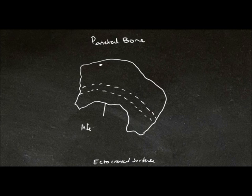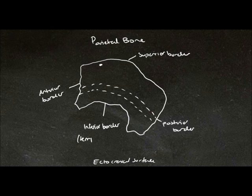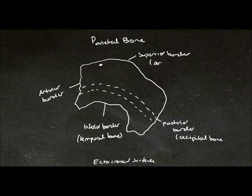This here is the inferior border. Here we have the posterior border. Here we have the anterior border. And here we have the superior border. The inferior border is articulating with the temporal bone. The posterior border is articulating with the occipital bone. The superior border is articulating with the other parietal bone. The anterior border is articulating with the frontal bone. And this border here is articulating with the sphenoid bone.